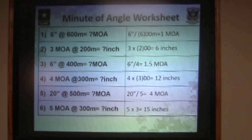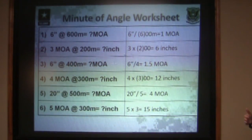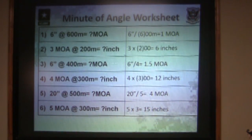So if you're at 300 meters and you move your sights five minutes of angle in one direction or the other, you're going to move the impact of that round 15 inches on target.